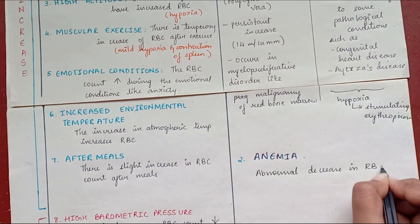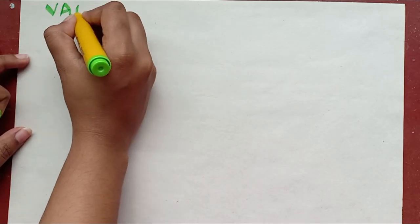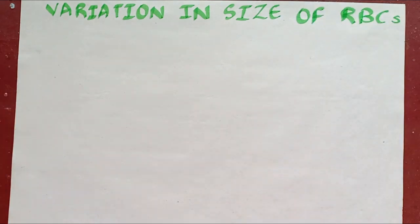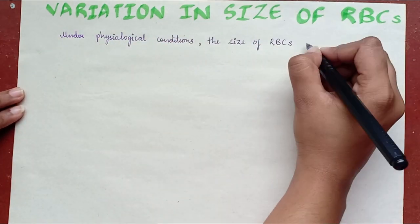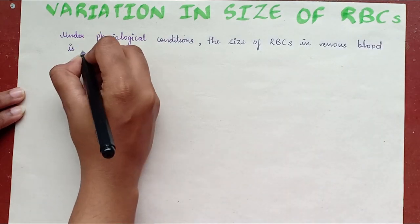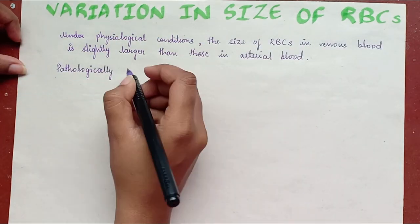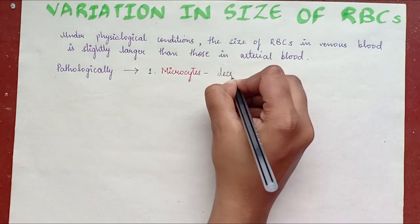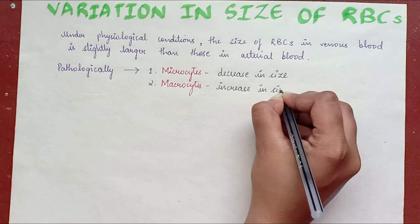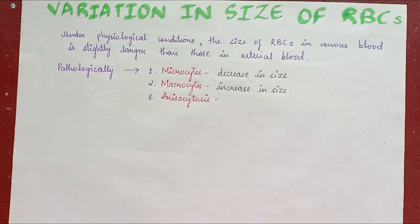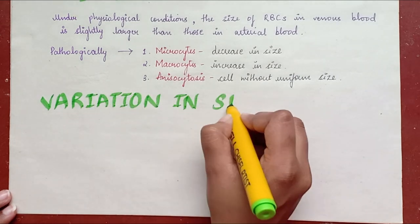Anemia involves an abnormal decrease in RBC count. Variation in the size of red blood cells: under physiological conditions, RBCs in venous blood are slightly larger than those in arterial blood. Pathological size variations include microcytes (decrease in size), macrocytes (increase in size), and anisocytosis (cells without uniform size).